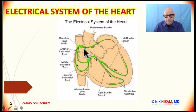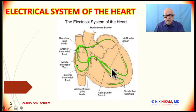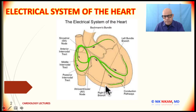The electrical system of the heart basically consists of the sinus node, the AV node, the inter-nodal connections, the bundle of His, the right and the left bundle branches, the Purkinje fibers, and finally the myocardial tissue itself.